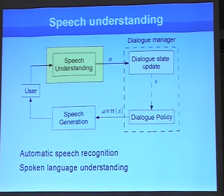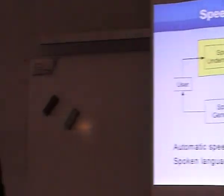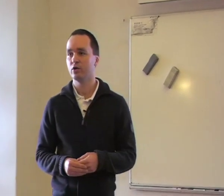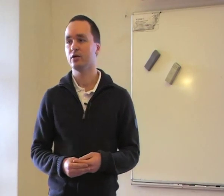The speech understanding component is composed of automatic speech recognition, which transforms the input audio signal into word sequences. These word sequences are then processed by spoken language understanding, which extracts some meaning from the utterances. There is then a dialogue state update component that tracks all information necessary to successfully complete a dialogue — it stores variables such as type of food, area, or additional constraints in a restaurant domain.